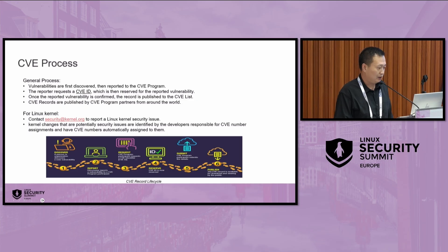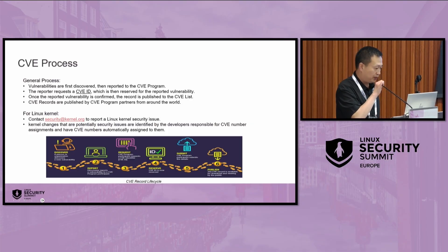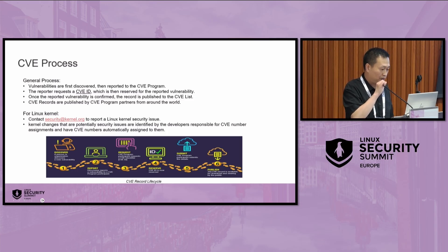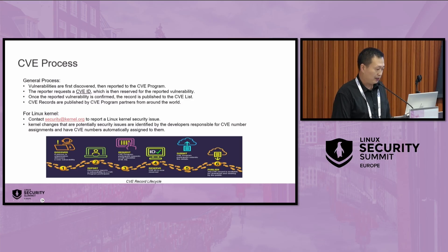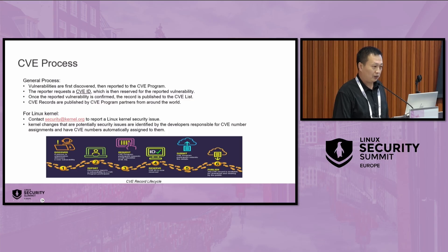I prefer to show the CVE process because it's very important. It not only helps us report issues to the program or to the CNA, but also helps us be aware of CVE issues as early as possible. Normally, we try to send discovered vulnerabilities to the CVE program; the reporter requests a CVE ID, which is then reserved for the reported vulnerability. Once confirmed, the record is published to the CVE list, and then published by CVE program partners around the world. For the Linux kernel, it's much easier — if you find security issues, just send a patch or email to security@kernel.org. Dedicated people at kernel.org review changes in mainline or the stable tree, and if they find a potential security issue, they assign a CVE ID to it.